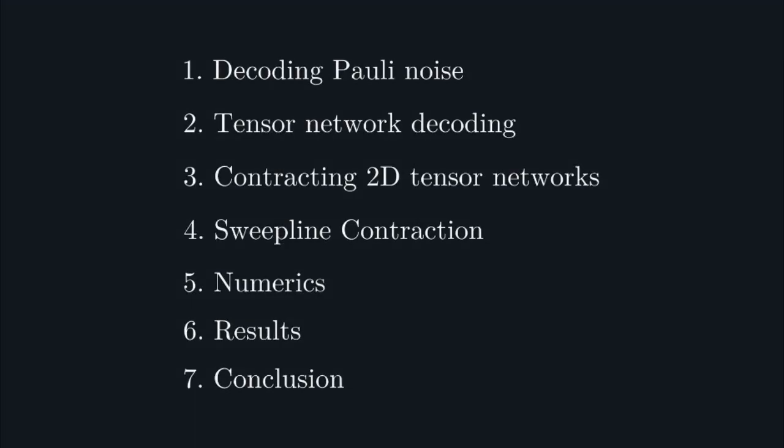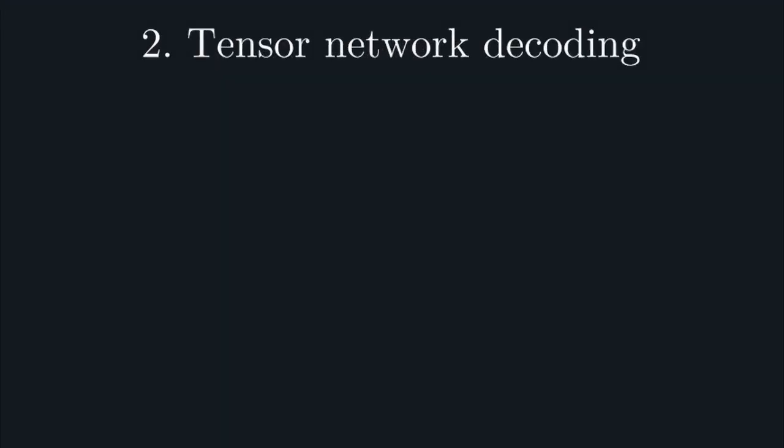So far, we've looked at decoding in the abstract. Now we're going to turn our attention to how one might go about actually implementing it. The approach we're going to look at relates the error class probabilities of our code to values of a tensor network.